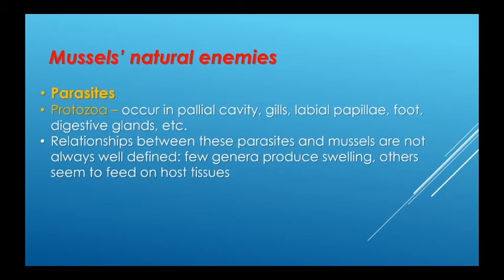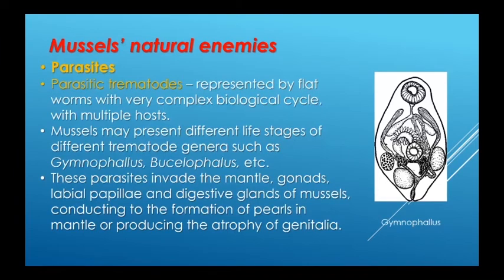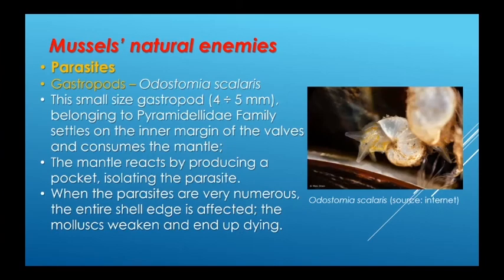Parasites of mussels include protozoans occurring in the palleal cavity, gills, labial palps, digestive glands, etc. Relationships between these parasites and mussels are not always well defined — few genera produce swelling, others seem to feed on host tissues. Other parasites are parasitic trematodes — flat worms with very complex biological cycles and multiple hosts. Mussels may present different life stages of different trematode genera such as Gymnophallus and Bucephalus, which invade the mantle, gonads, labial papillae, and digestive glands, leading to the formation of pearls in the mantle or producing atrophy of genitalia.